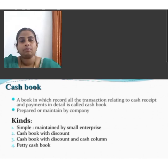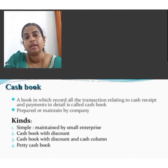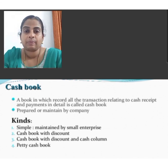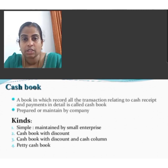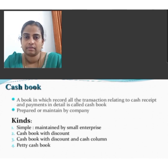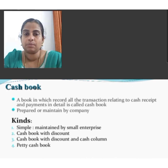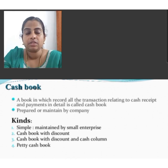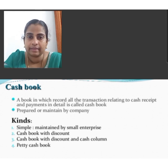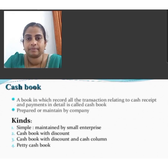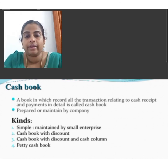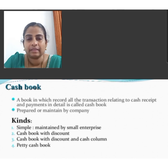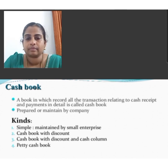Double column cash book is a book prepared to record both bank transactions and cash transactions. Single column cash book is a book prepared to record only cash payments. Petty cash book is a book maintained to record only small payments, that is petty expenses. These are the important types of cash book.